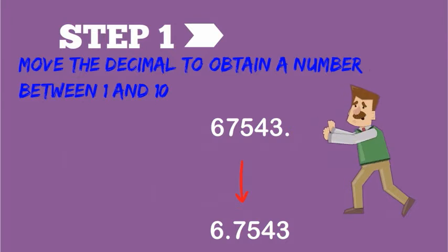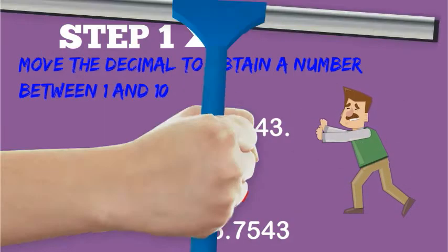It has to be larger than 1 but less than 10. This will be the decimal part of our scientific notation - the number that goes out in front.